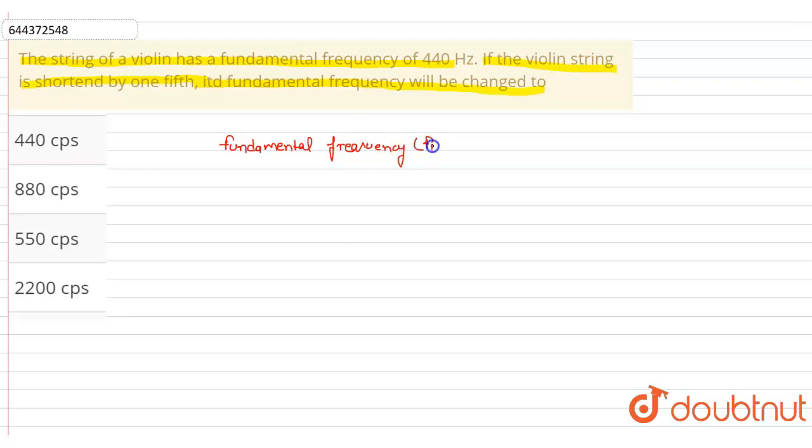Let's say f1, so f1 is equal to 1 by 2L under root T by mu, where L is length.